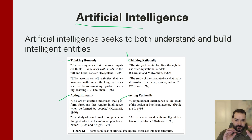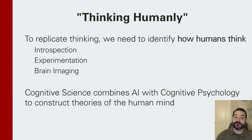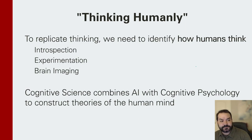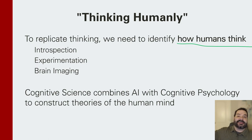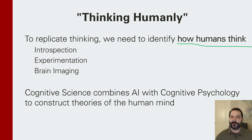Each one of these has their own pieces. Thinking humanly, for example, looks at the entire idea of, quite literally, how do humans think? What is it that made me decide what to eat today or what type of shirt to pick out for recording YouTube lectures? How am I thinking about that?